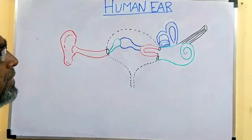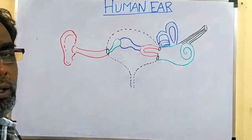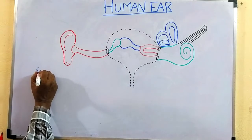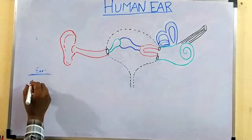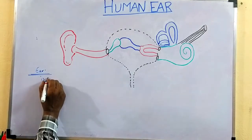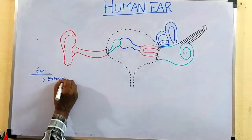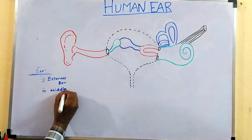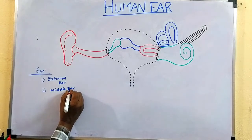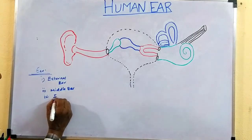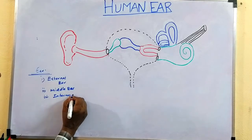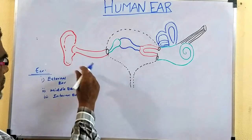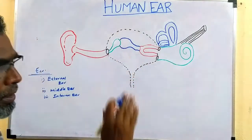Here the diagram of a structure of the human ear is shown. The human ear has three regions: external ear, middle ear, and internal ear. We are going to see the details of each.